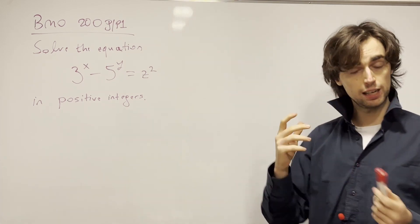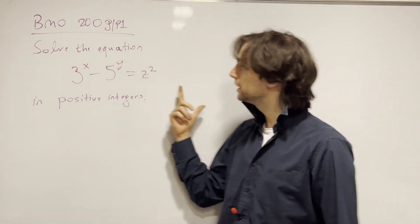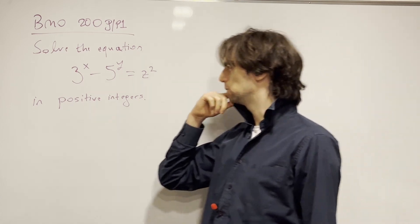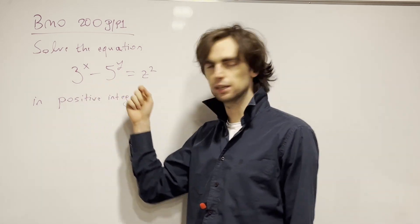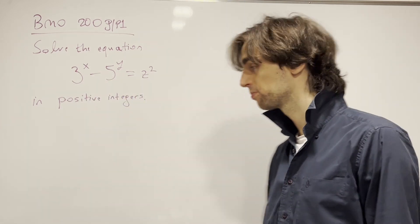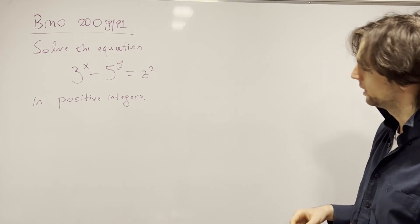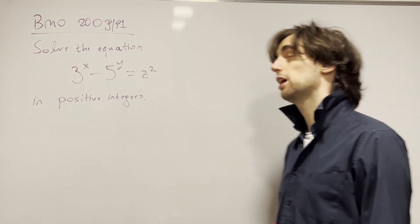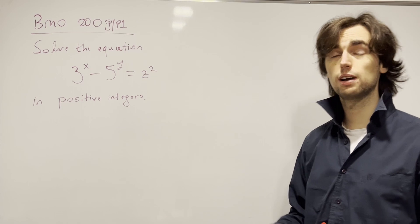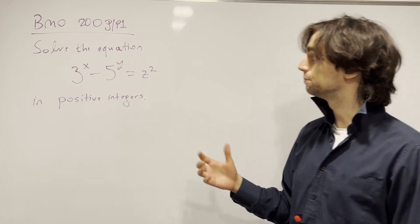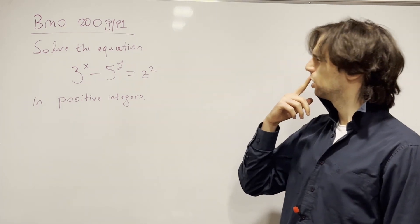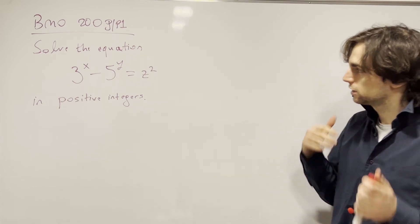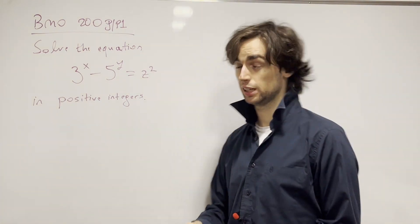What would you do? Let's begin. We have this equation that we need to solve in positive integers. We can check: 9 minus 5 works, for example. What about 27 minus 25? No. 81 minus 5? No. So that could be the only solution, or maybe there are more — but how do we approach these types of problems?